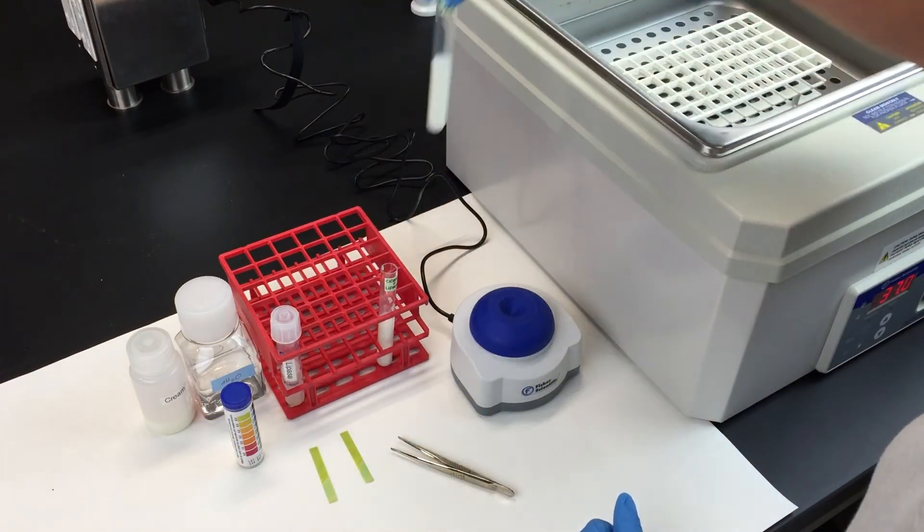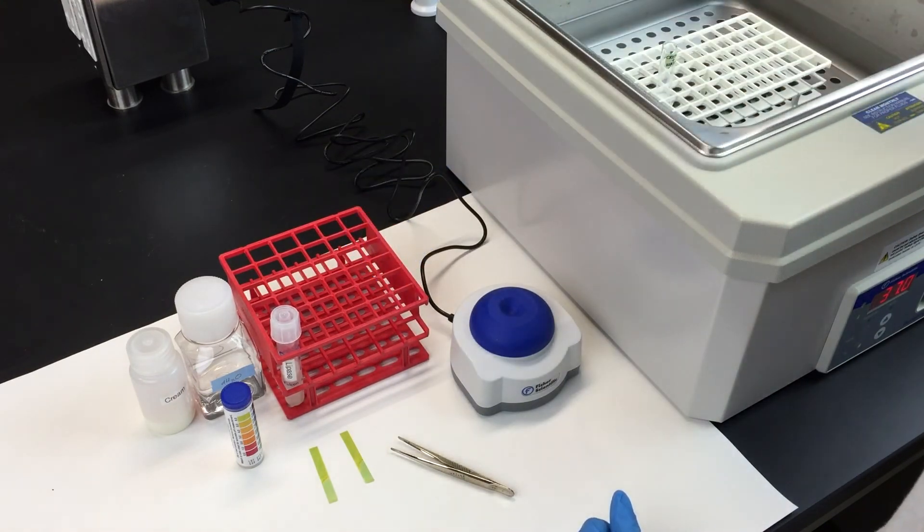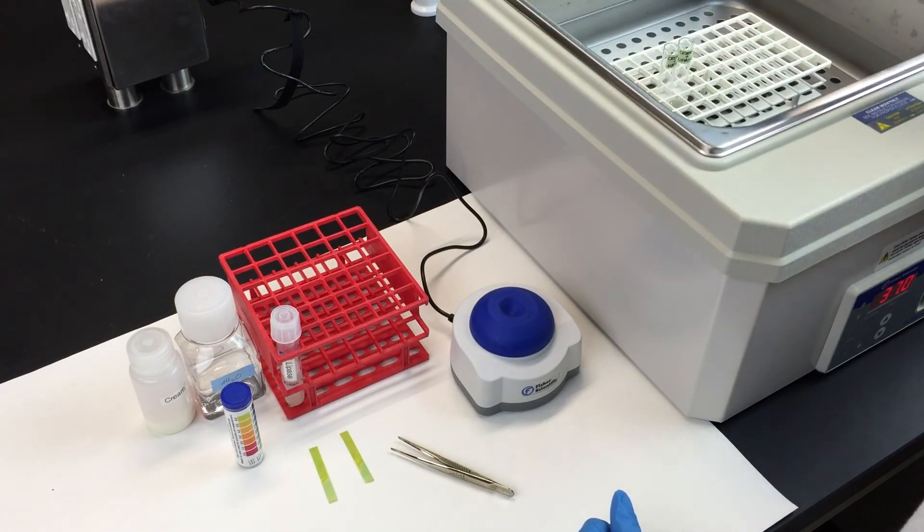Put the tubes in a 37 degree water bath for 30 minutes. After 30 minutes, remove the tubes and check the pH again and note it down.